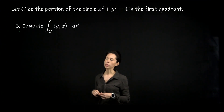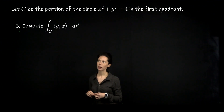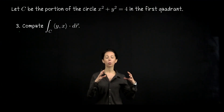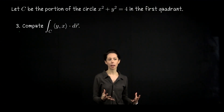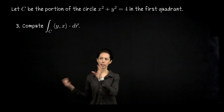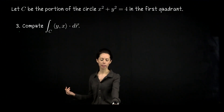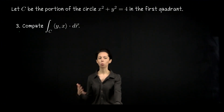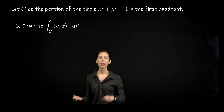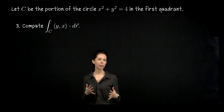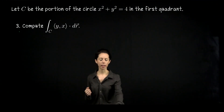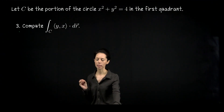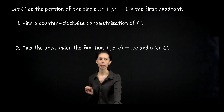As we do so, focus on the differences: this is a scalar line integral — what do I need to set this up? Versus part 3, which is a vector line integral — what do I need to set that up? It's easy to get mixed up between the two types of line integrals, so really pay attention to exactly which pieces you need.